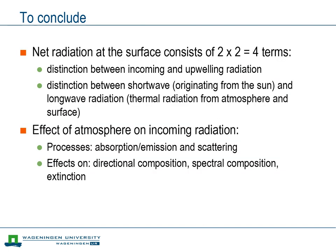So, to conclude, we have seen how the main driver of the surface energy balance consists of four terms, which are distinguished based on wavelength and direction. Two processes were identified through which the atmosphere influences the radiation reaching the surface: absorption and emission on one hand, and scattering on the other hand. The effects of those processes are that the radiation is changed in terms of directional composition, spectral composition, and in the amount.